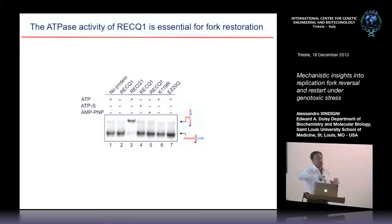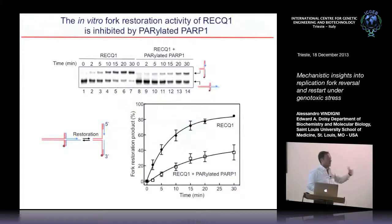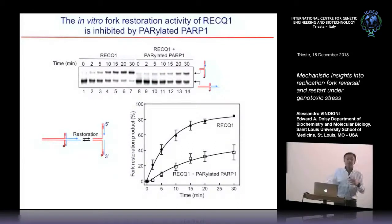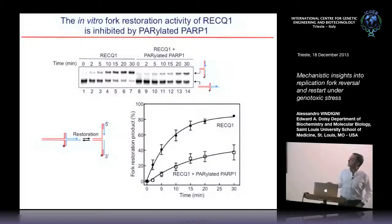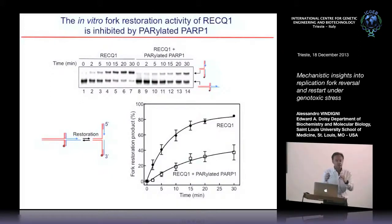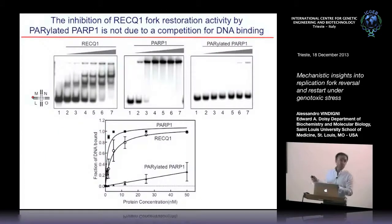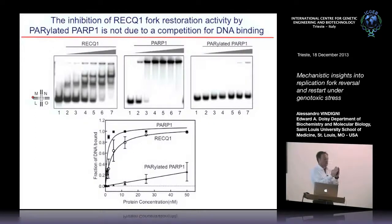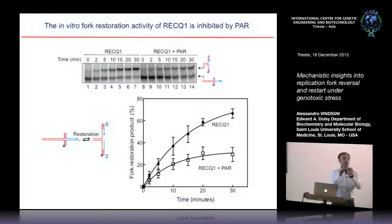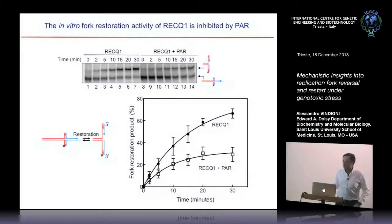Since RECQ1 interacts with PARP, we added activated PARP to the reaction mix using equimolar concentrations of RECQ1 and activated PARP. Equimolar activated PARP inhibits the fork restoration activity of RECQ1. This was not due to competition for DNA binding, since parylated PARP does not bind DNA well due to the negative charge of poly-ADP ribose causing electrostatic repulsion. We validated the same result using poly-ADP ribose directly: in its presence, the fork restart activity of RECQ1 is reduced.